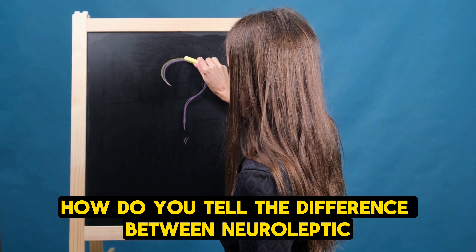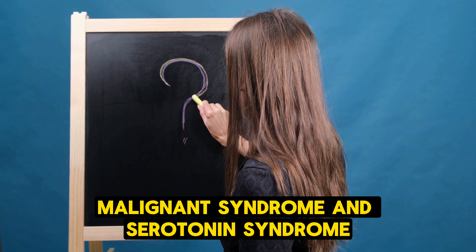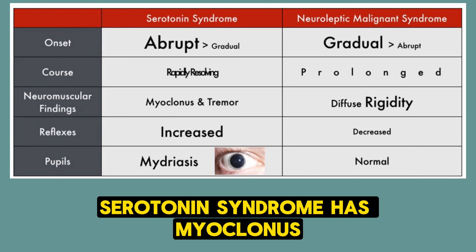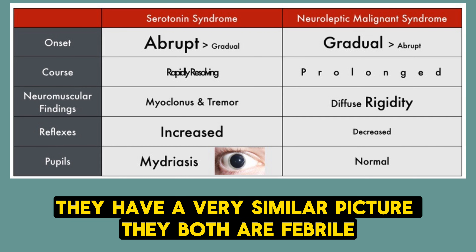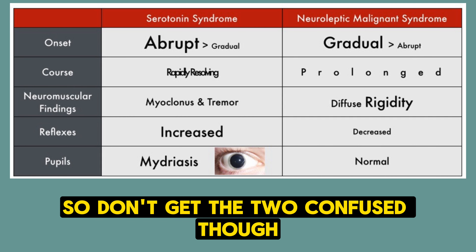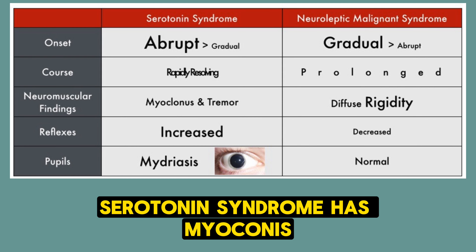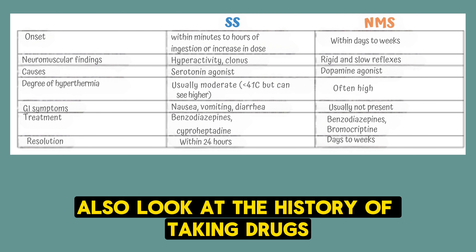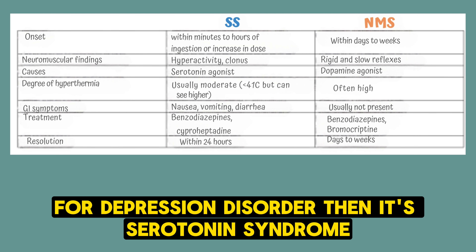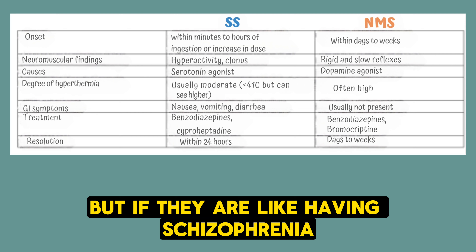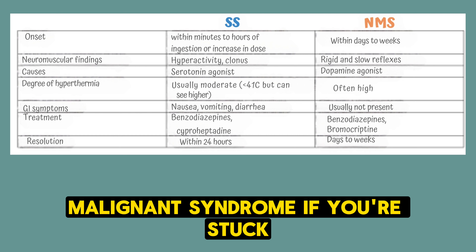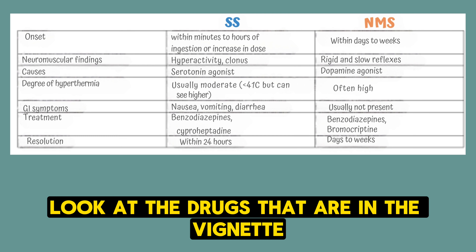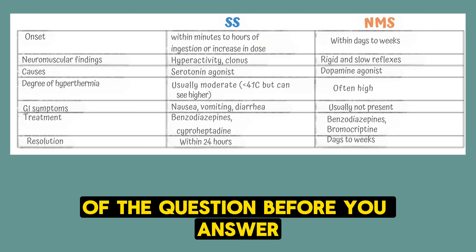How do you tell the difference between neuroleptic malignant syndrome and serotonin syndrome? Serotonin syndrome has myoclonus, whereas NMS does not. They have a similar picture — both are febrile and have rigidity. If the history involves antidepressants, think serotonin syndrome; if the patient has schizophrenia, it's more likely NMS. Look at the drugs in the vignette before you answer.